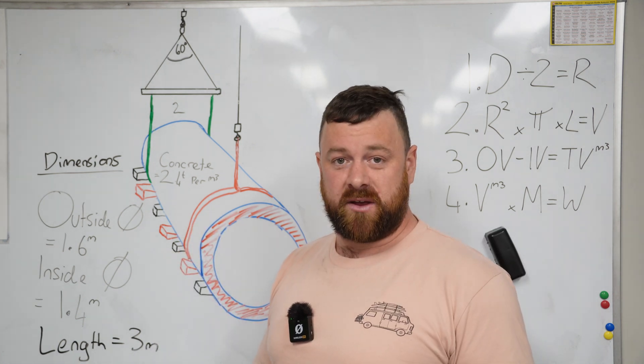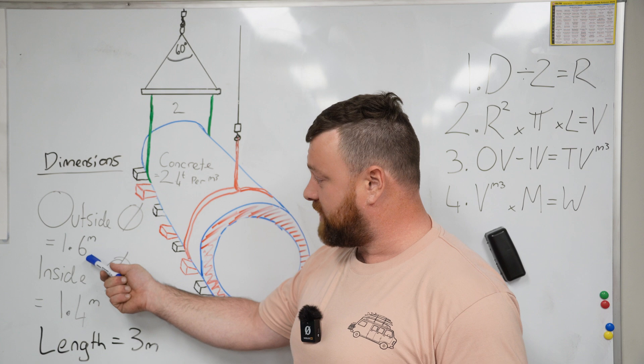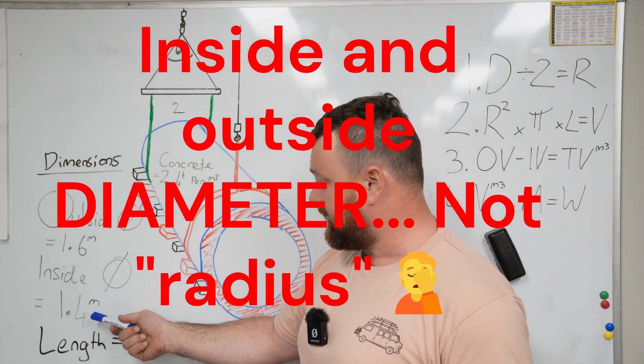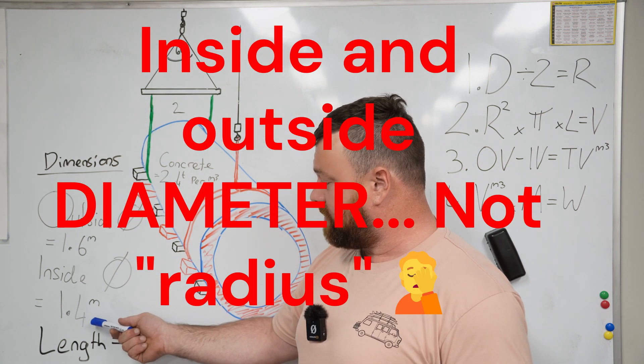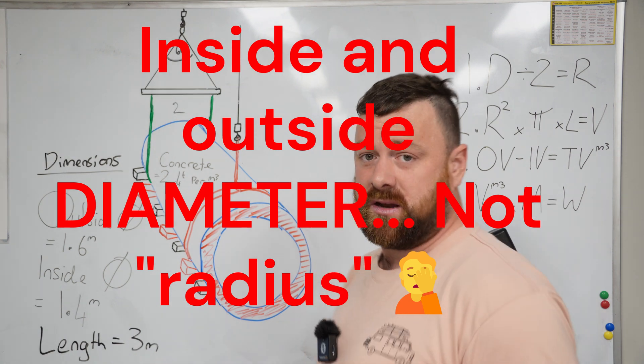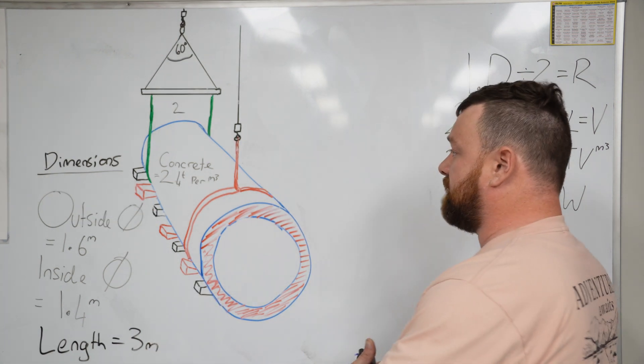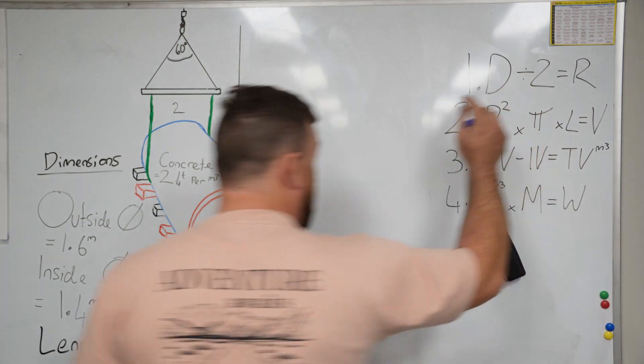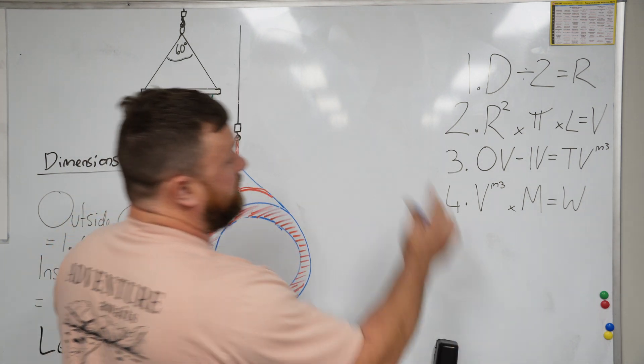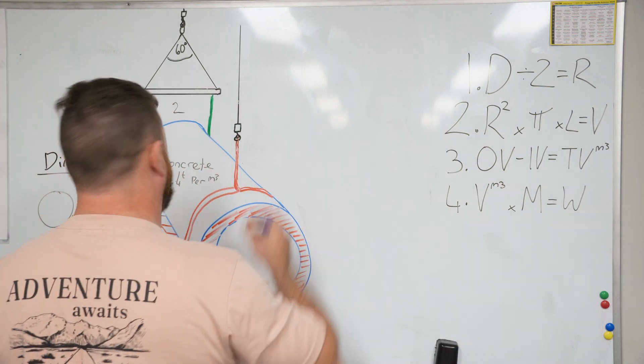This is how you do it. Get the tape measure out and get your dimensions. We've found our outside dimension is 1.6 meter radius, our inside dimension is 1.4 meter radius, and it's 3 meters long. Grab yourself a calculator. First thing we want to do is follow our four-part formula: diameter divided by 2 equals our radius.